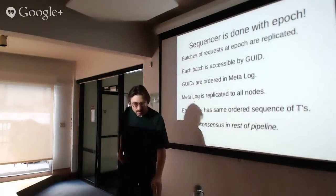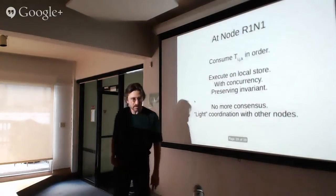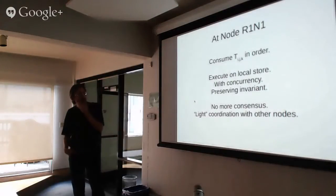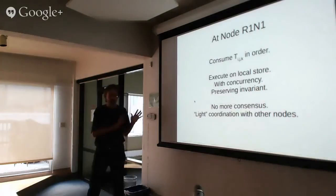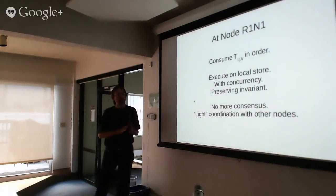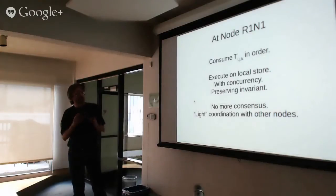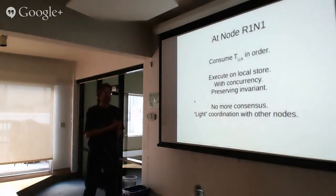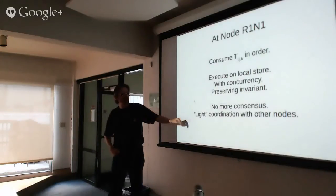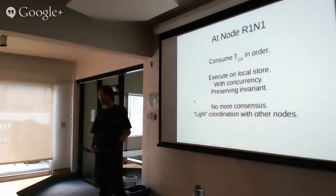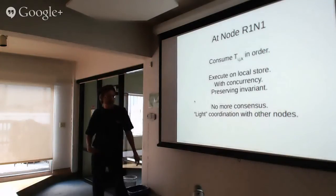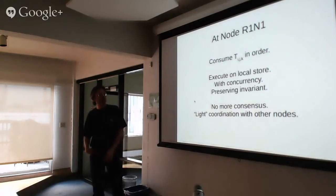That's actually a cool thing about Calvin. Now that we've finished these first steps, we can work entirely within a node. After this point, almost everything we do is local to a node with just a little bit of light coordination with other nodes — and that light coordination is far less than two-phase commit.